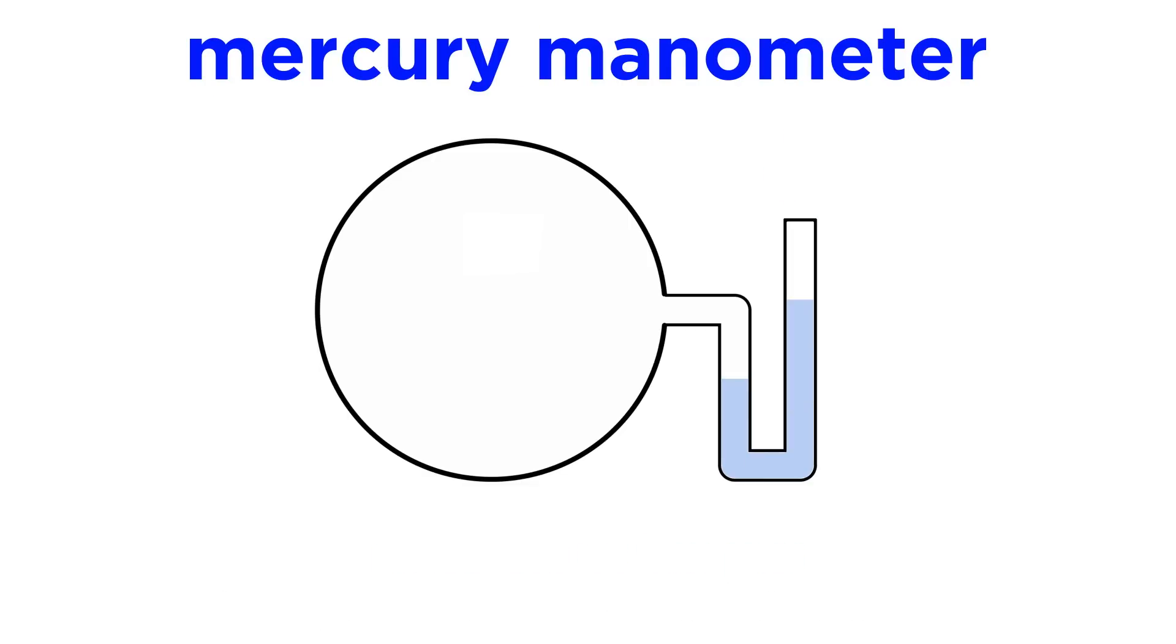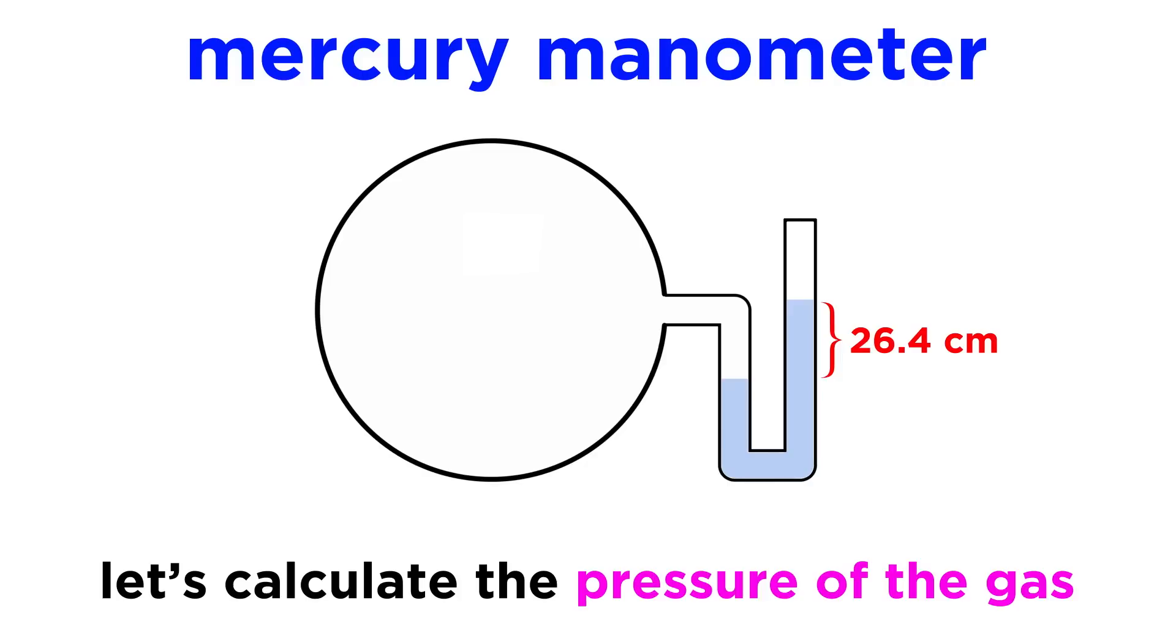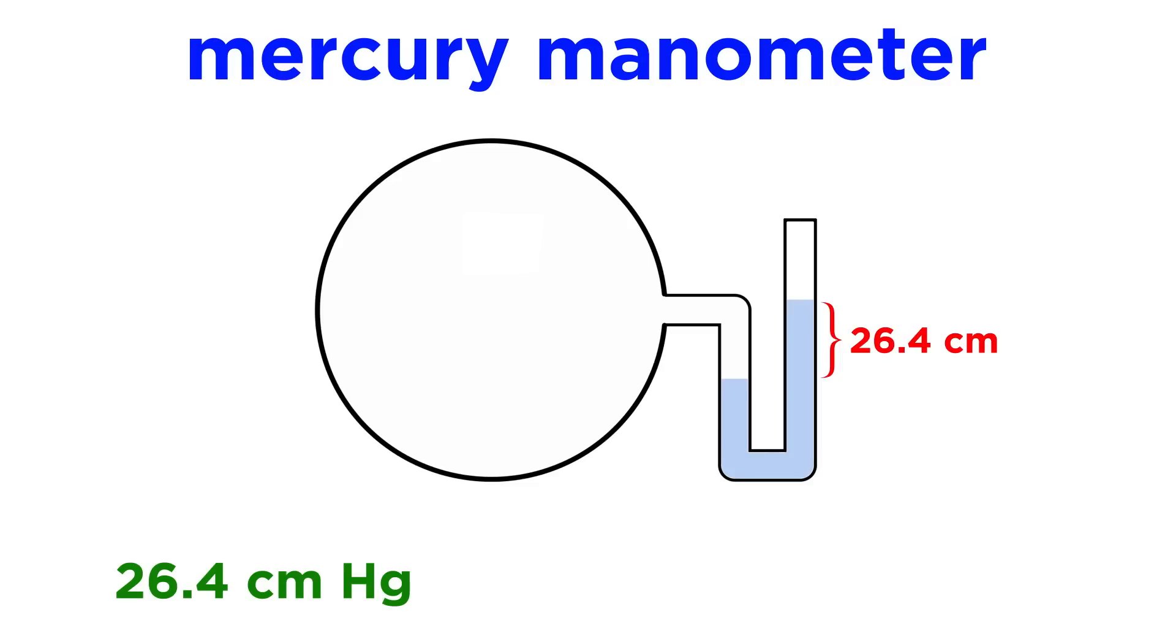Let's say we are looking at a closed-end manometer filled with mercury, and we measure the difference in height as being 26.4 centimeters. We can use this value to express the pressure of the gas that is pushing down on the mercury in a few different units.